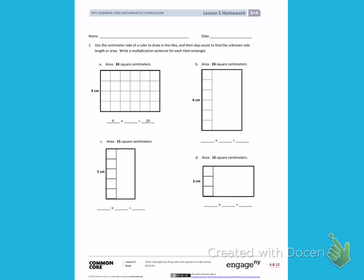When I look at letter A, I see that one side is 4 centimeters and they have filled in the top telling me that the area is 24. When I look across the top of my measurement, I see that there are 1, 2, 3, 4, 5, 6 squares going across the top.